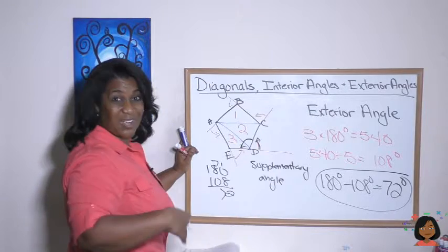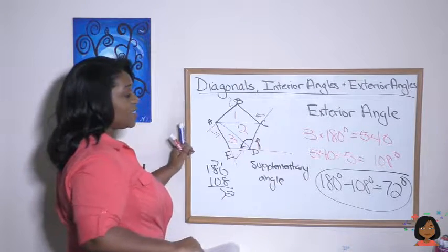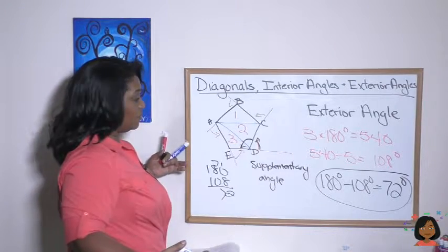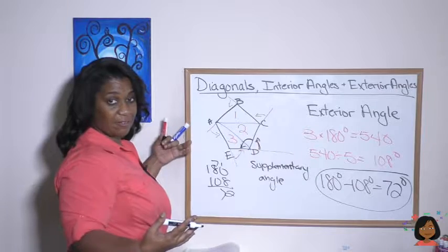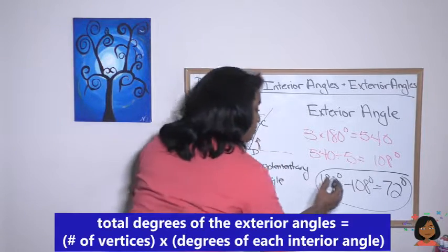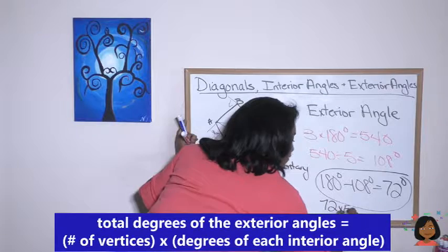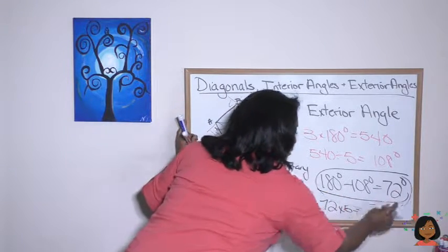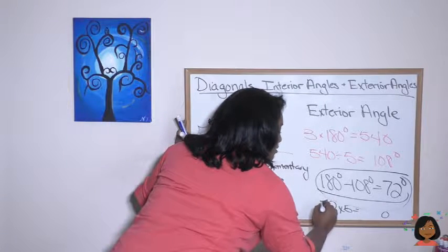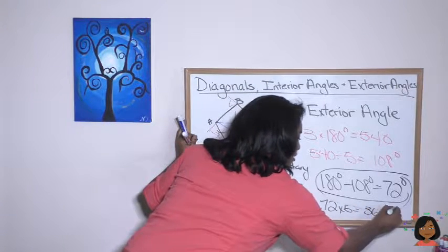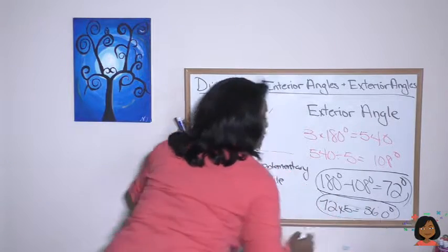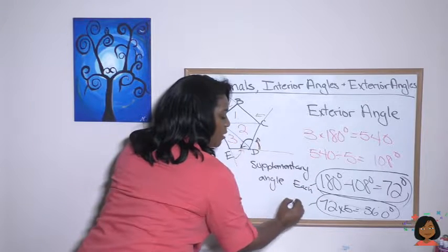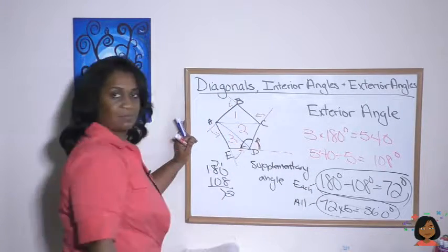If I want to find the total degrees of all exterior angles, I have five exterior angles on the pentagon, so I multiply 72 times five, which gives 360 degrees total for all exterior angles.